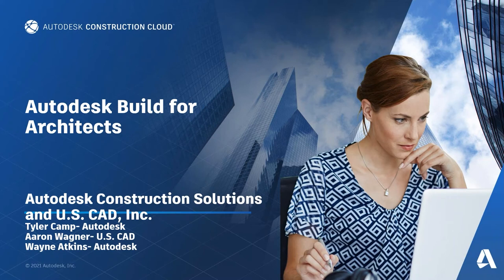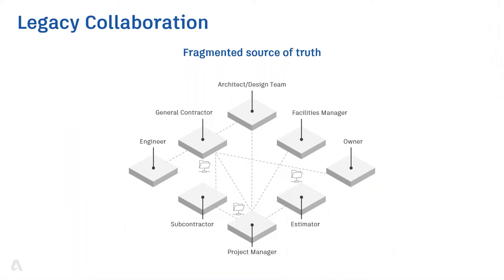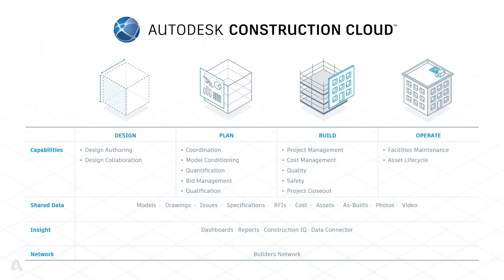Now Tyler's going to talk about the current state of the industry. As you look at this slide, you can see it's a fragmented truth — it typically starts from design and goes in multiple directions: project managers, estimating, general contractors, even the owner. Oftentimes we find ourselves doing redundant systems or duplicating information, having one person create an item in their system and then going to another system to recreate it. It's really a spider web that causes data silos and lost information.